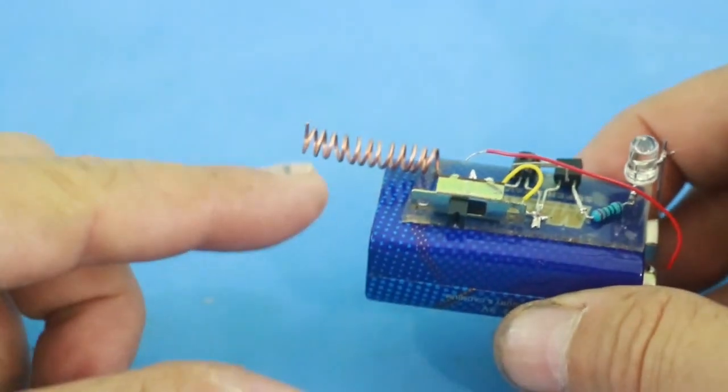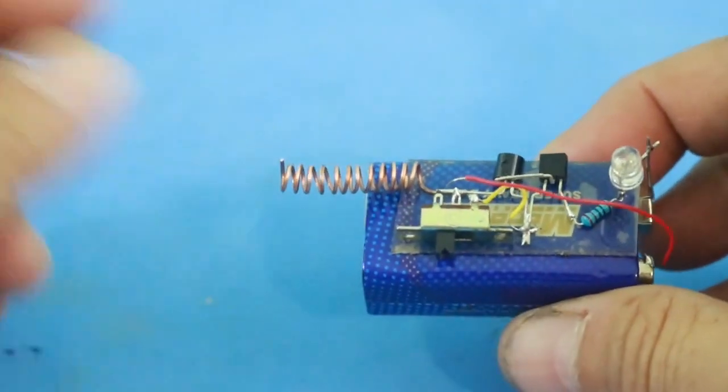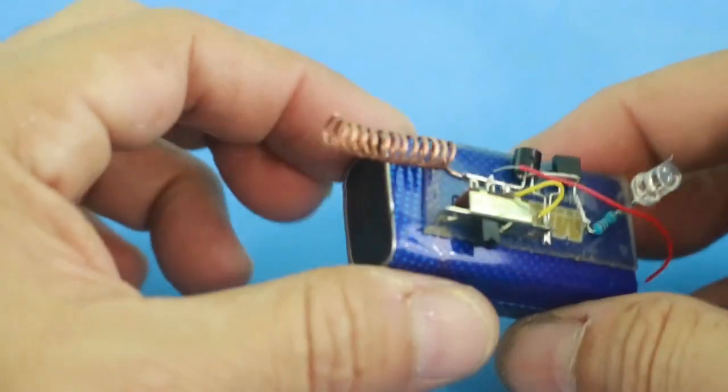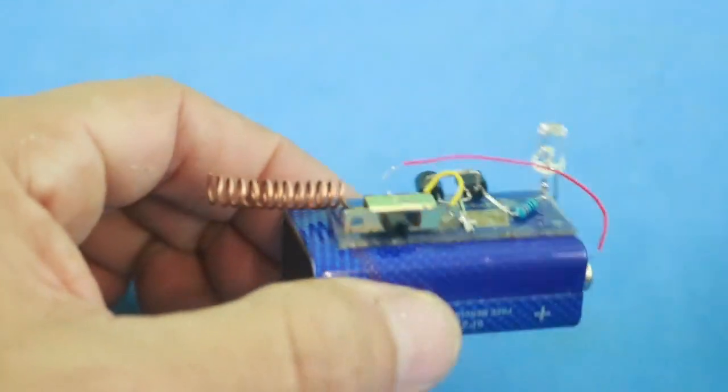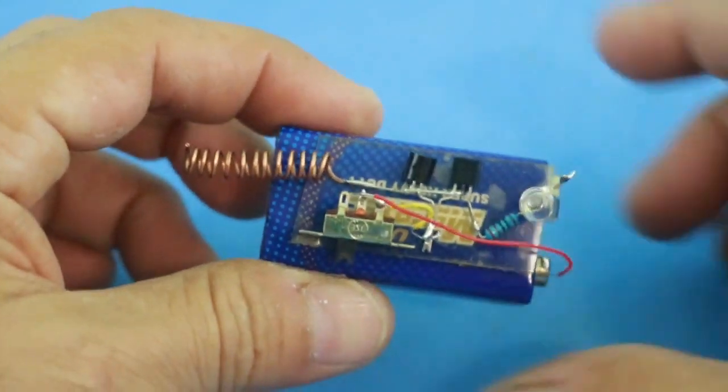As you can see, the antenna is a loop of wire, normal copper wire. And let's see how it works.